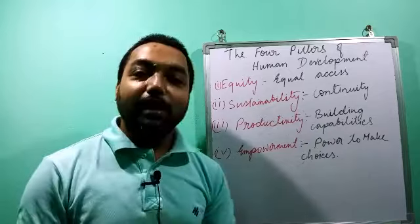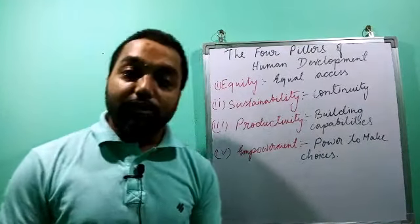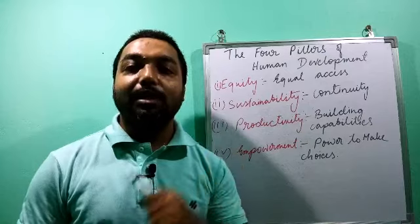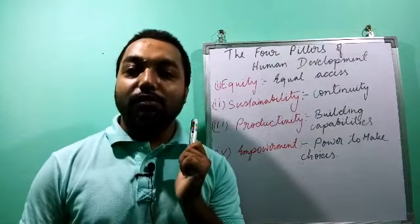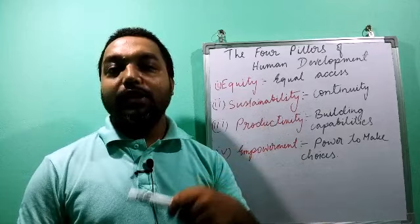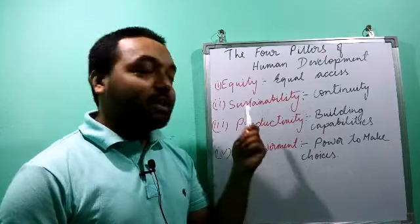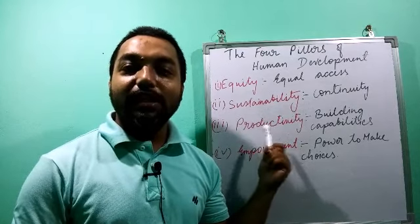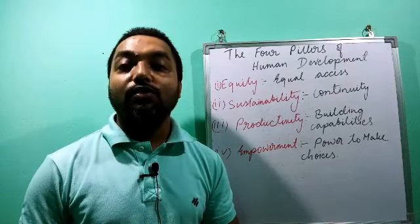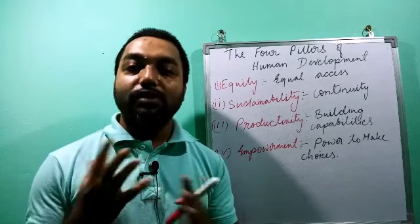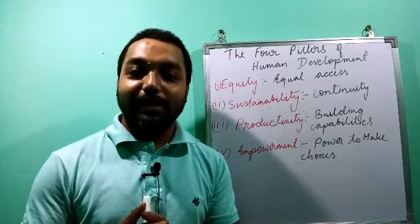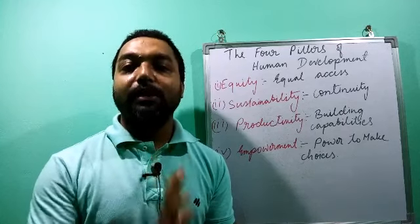Empowerment means power should be in the hands of the people to make choices — no government or authority should impose anything on people, so they can make their own choices. These are the four pillars of human development — equity, sustainability, productivity, and empowerment — on which human development is fully implemented in a country. In the context of India, some sectors are still lacking in developing these four pillars, and we should work together and bring this to government attention so those sectors are also developed.